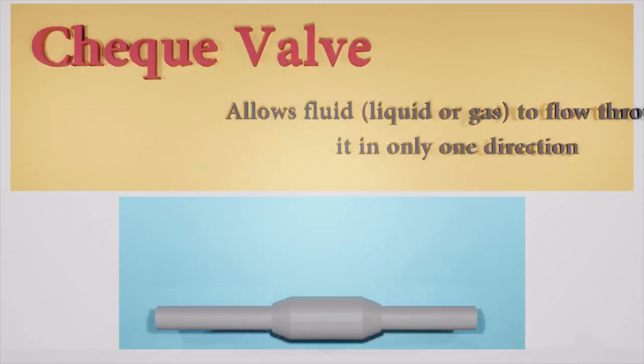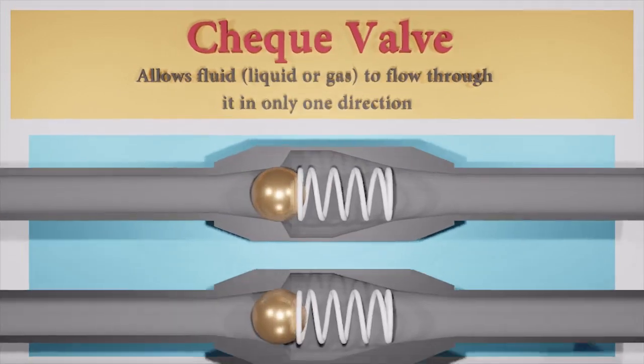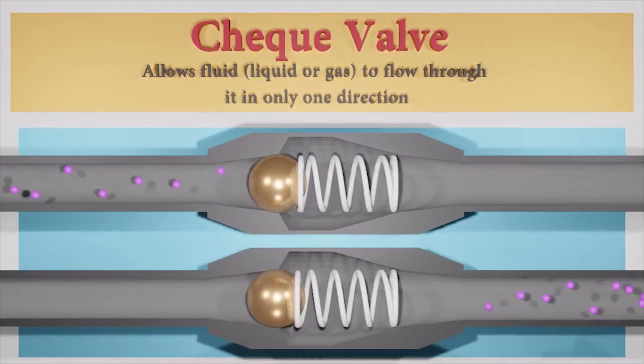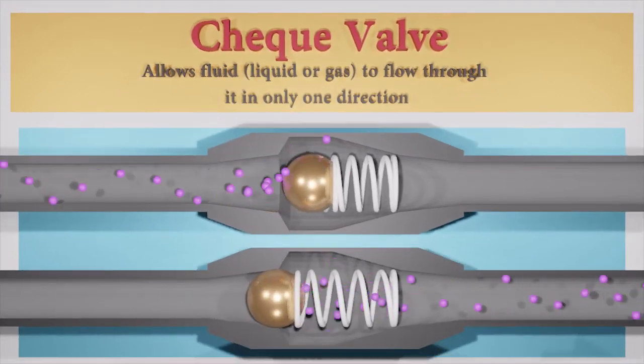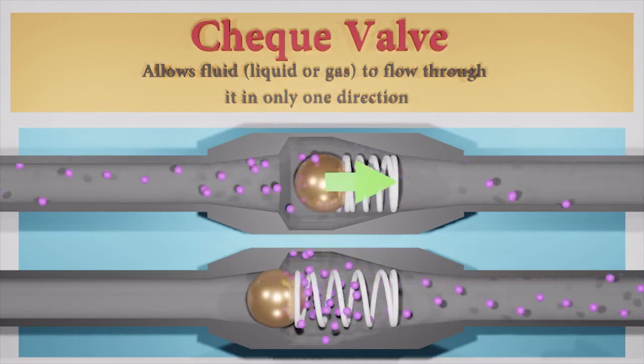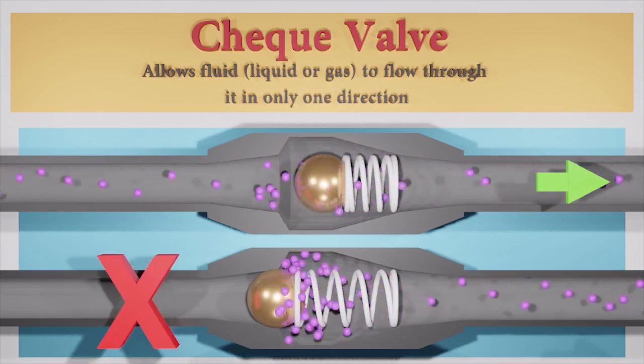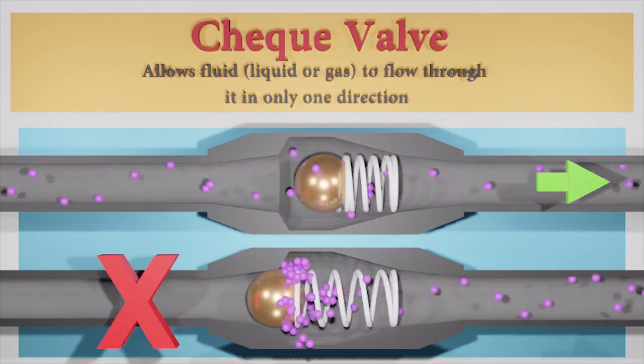Diode behavior is analogous to the behavior of a hydraulic device called a check valve. A check valve allows fluid flow through it in only one direction. Here the two check valves try to flow water in different directions, but current flow is permitted in only one direction.